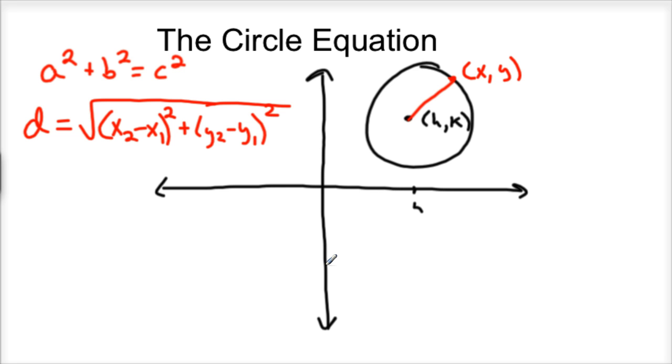So how does that work with our problem? Let's substitute everything in. Well, distance is actually the radius of our circle.